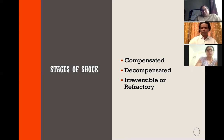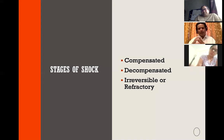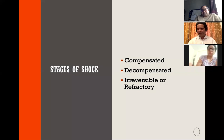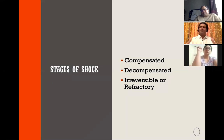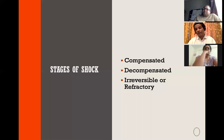Briefly, the stages of shock: there is a compensated phase where your body compensates for whatever takes place; then the decompensated phase where all compensating mechanisms are failing; and finally irreversible or refractory shock. When you are in the irreversible stage, you can try your best but it may not be possible to salvage the organ. You might still salvage the life, but the organ is gone — for example, acute tubular necrosis from irreversible shock may leave a patient needing dialysis for the rest of their life.